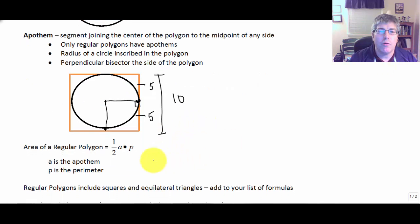And our new formula, the area of any regular polygon, whether it's 3-sided, 4-sided, 5-sided, 6-sided, 12-sided, the area of any regular polygon is 1/2 A times P or 1/2 the apothem times the length of the perimeter.